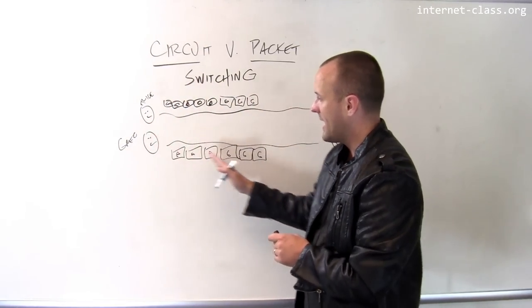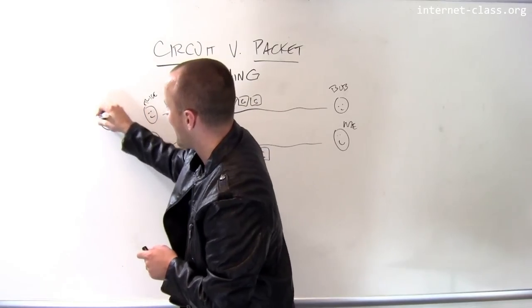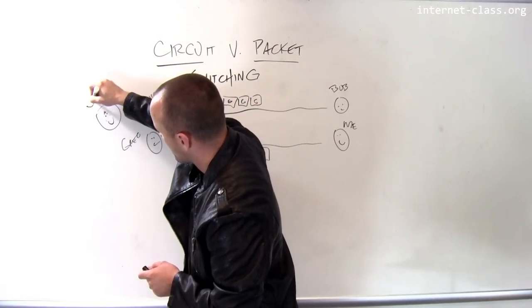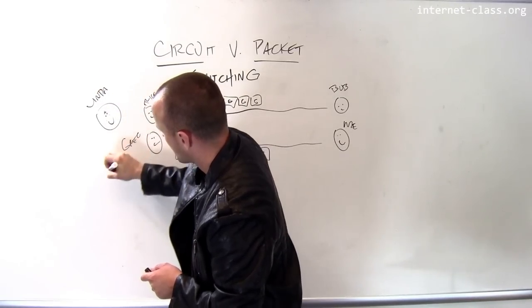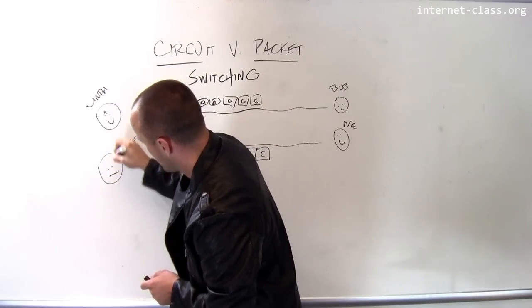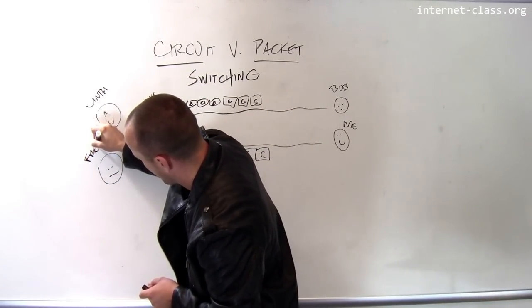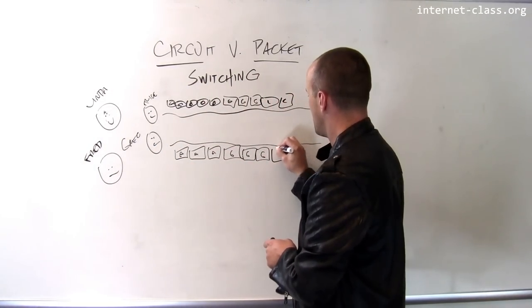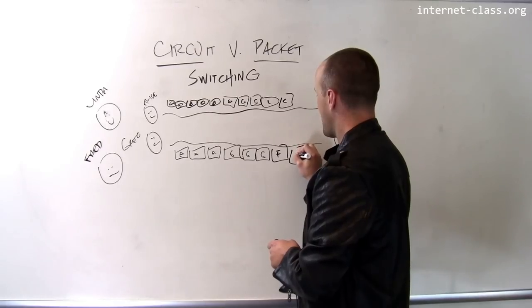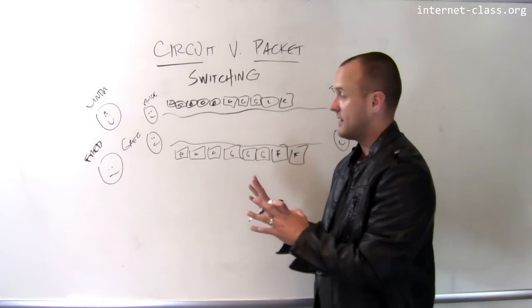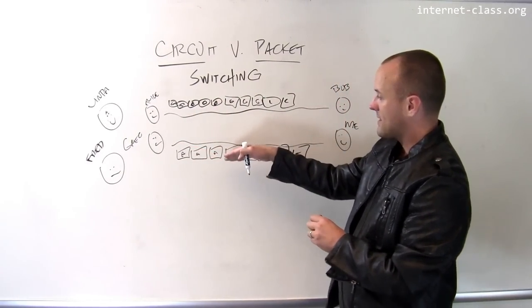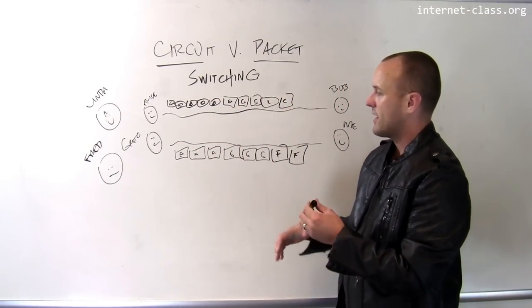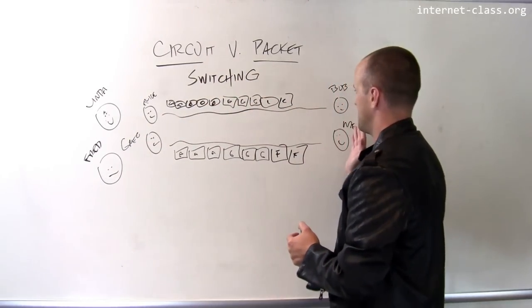And by moving to a packet switch network, I can actually add a lot of additional people over here, like Linda and Fred. But Linda and Fred, their packets can just be transmitted over these same wires as long as there's capacity. And this approach allows me to make the best use of all of the network resources I have because I don't have to reserve them for this entire conversation between Alice and Bob.